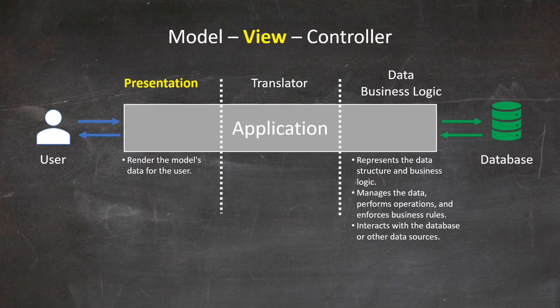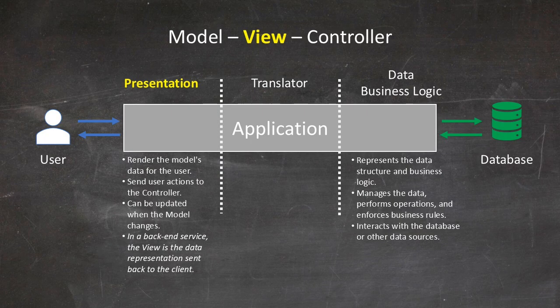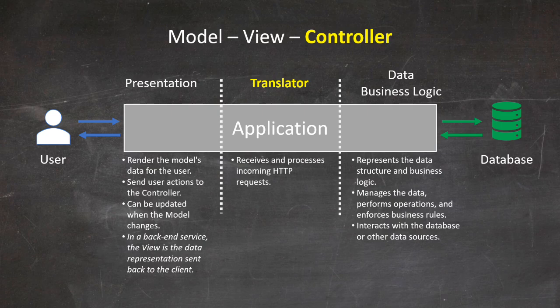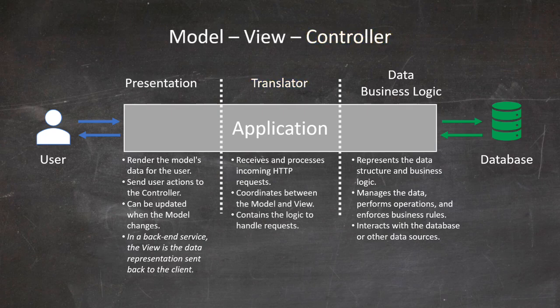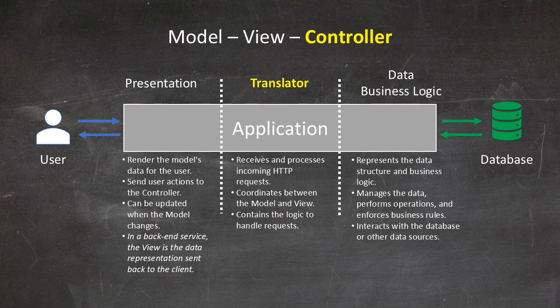The view or presentation layer renders the model's data for the user. In a full stack application, the view is responsible for sending the user actions — clicking on a button for example — to the controller layer. But in a back-end service, the view is the data representation sent back to the client. Finally, the controller or translator layer receives and processes incoming requests. The controller's primary job is to coordinate between the model and view. It also contains the logic to handle requests, which doesn't mean it owns the business rules — those are owned by the model.